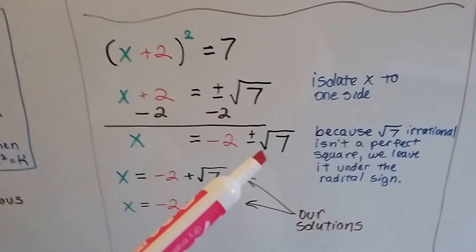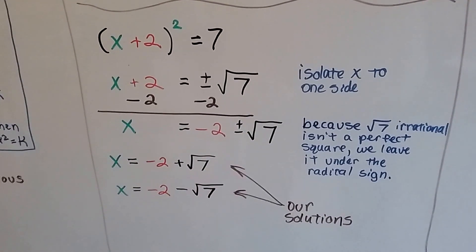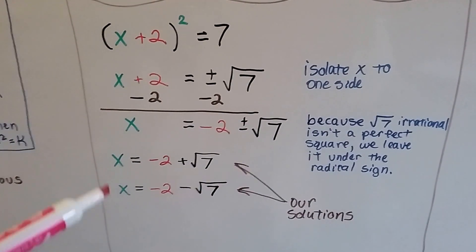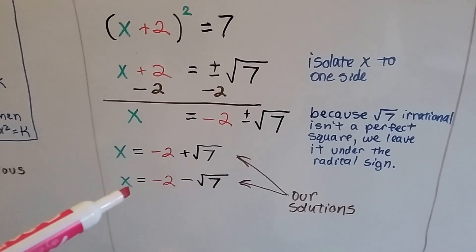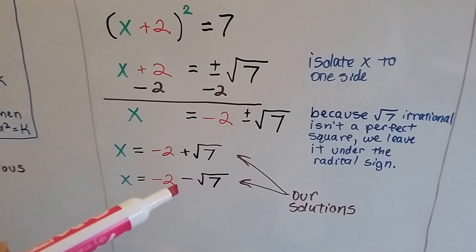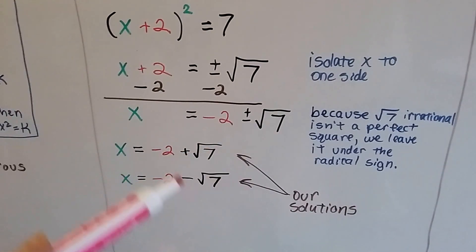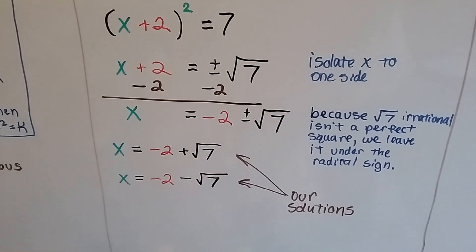Now, because this square root of 7 is irrational, it's not a perfect square, we leave it underneath that radical sign. And we've got to open up this plus or minus. So now we've got x is equal to a negative 2 plus square root of 7, or x is equal to negative 2 minus the square root of 7. And that's our solutions right here, these two. And the 7 is going to stay underneath the radical sign.